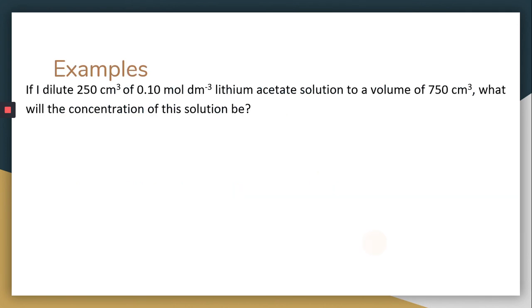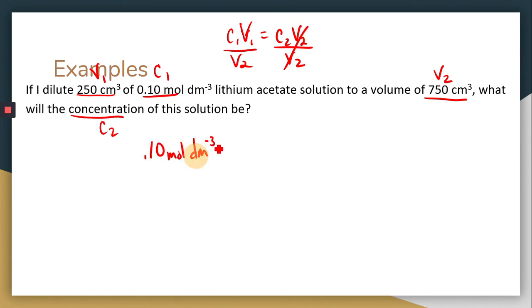Looking at another problem. So here we have a volume and concentration. So this would be C1 and V1. And we're changing the volume to 750. So we want to know what the concentration would be. So we would take our formula. And we would divide by V2 to get C2. So we're going to take our 0.1 moles per decimeter cubed. Multiply it by the 250 centimeters cubed. And then divide it by 750.